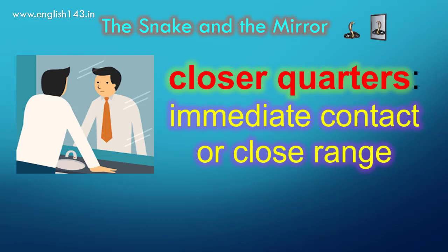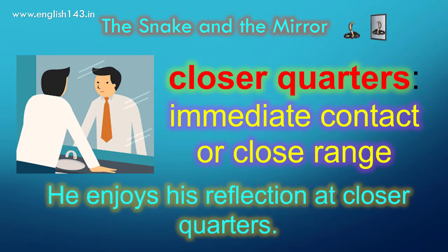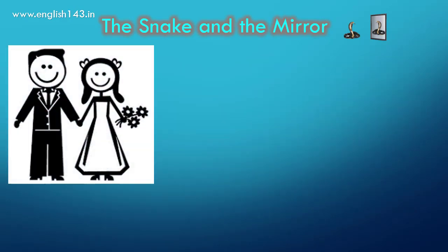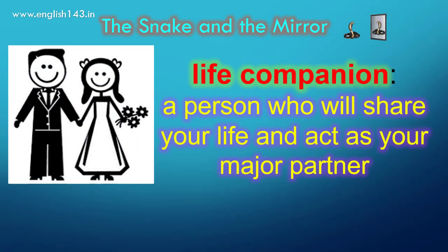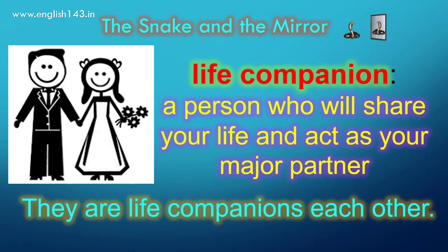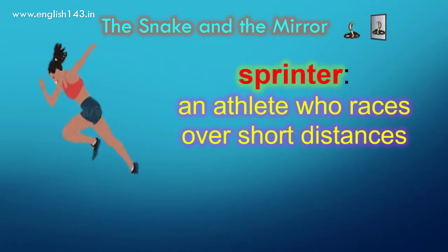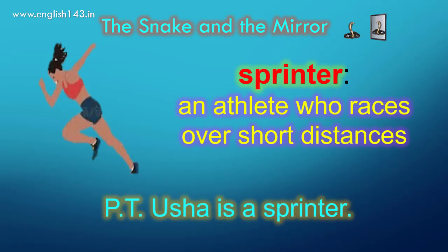Closer quarters means immediate contact or close range. He enjoys his reflection at closer quarters. Life companion is a person who will share your life and act as your major partner — he may be your husband, she may be your wife; they are life companions to each other. Sprinter is an athlete who races over short distances such as 200m or 400m. PT Usha is a sprinter.